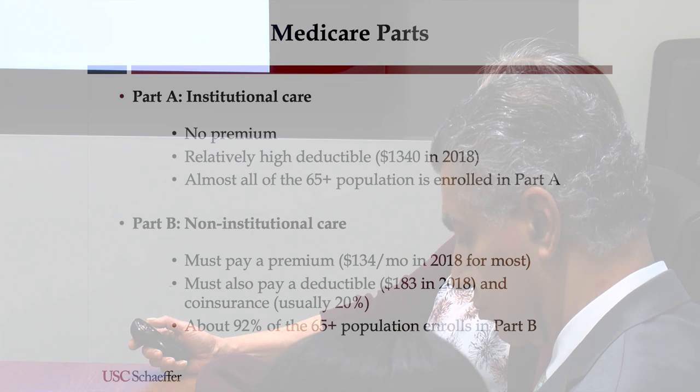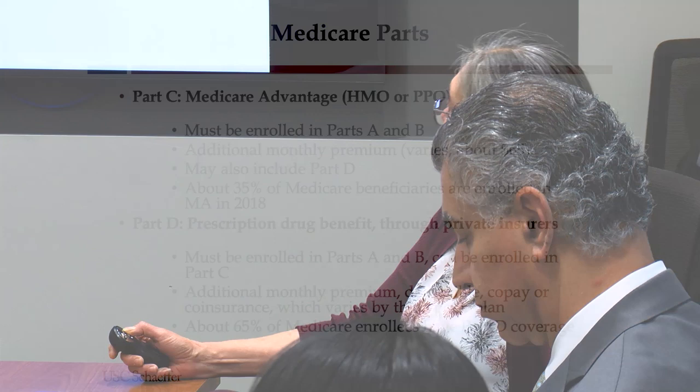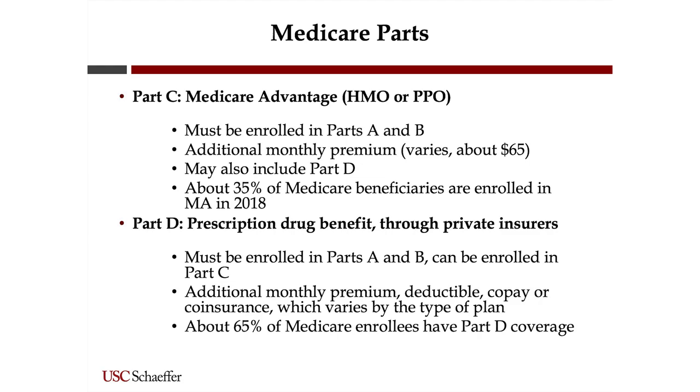Part C, also known as Medicare Advantage — an HMO or PPO — has been around for a while. In order to enroll in Medicare Advantage, you have to be enrolled in Parts A and B. There's usually an additional monthly premium of about $65, and it may also include Part D as part of that premium. In 2018, about 35% of Medicare beneficiaries were enrolled in Medicare Advantage.